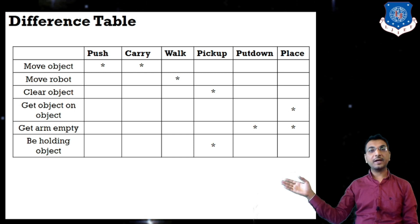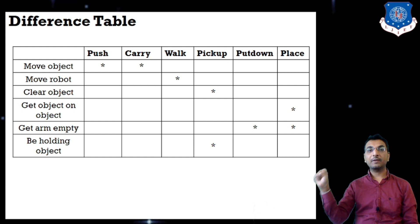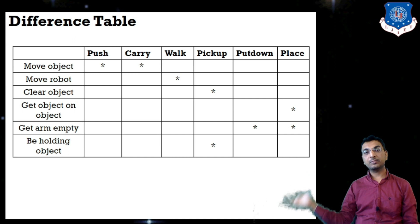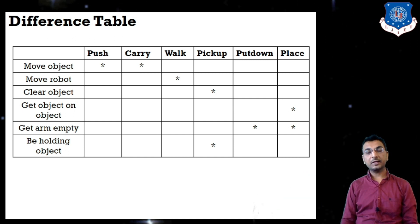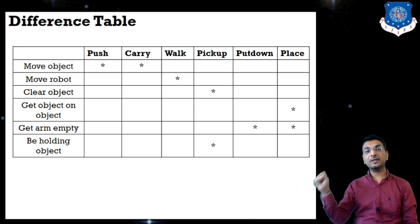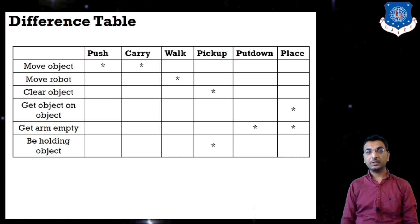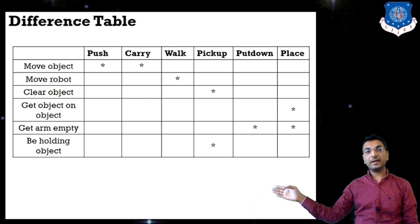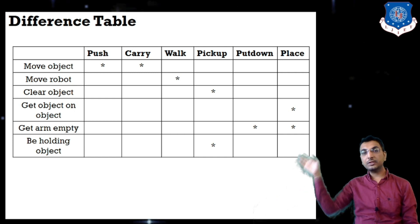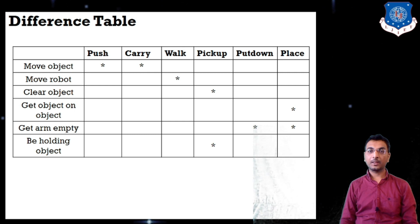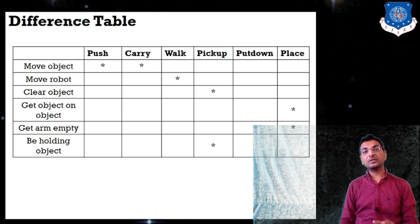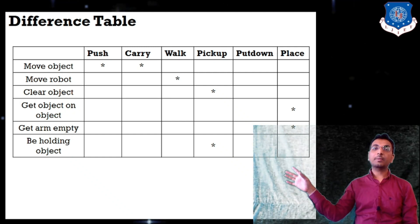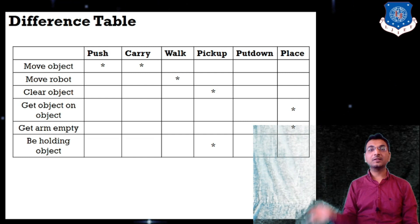For get-arm-empty — meaning the robot should not have anything in its arm — the putdown or place operation is used, after which the arm will be empty. For be-holding(object) — meaning the robot should have something in its hand — the pickup operation is used. This difference table shows how far the goal state is and how to reach it using these operators. That is why it is called Means-Ends Analysis — the operation is performed using forward or backward reasoning.